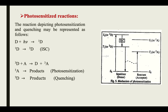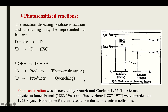Photosensitization was discovered by scientists Franck and Cario in 1922. James Franck and Gustav Hertz were awarded the 1925 Nobel Prize in Physics for their research on atom-electron collisions.